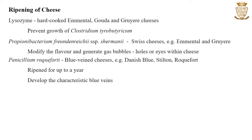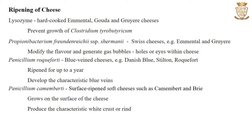Blue-veined cheeses such as Danish Blue, Gorgonzola, Roquefort and Stilton use the organism Penicillium roqueforti. Young cheeses are usually punctured with stainless steel rods to promote fungal growth by increasing the levels of oxygen. Cheeses are ripened for up to a year, during which they develop characteristic blue veins and aroma and flavour due to the presence of fungal metabolites. Surface-ripened soft cheeses such as Camembert and Brie use the organism Penicillium camemberti, which grows on the surface of the cheese for about 1 to 6 months to produce the characteristic white crust or rind, and hydrolytic enzymes secreted into the cheese modify the flavour and texture.